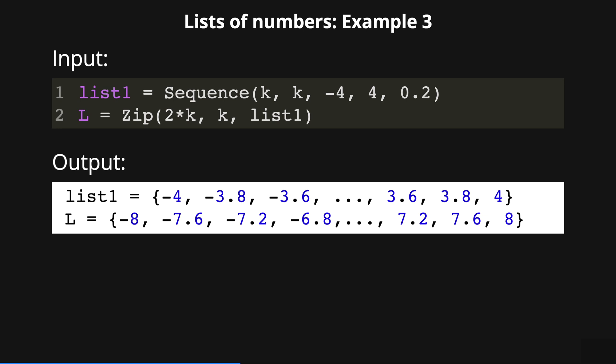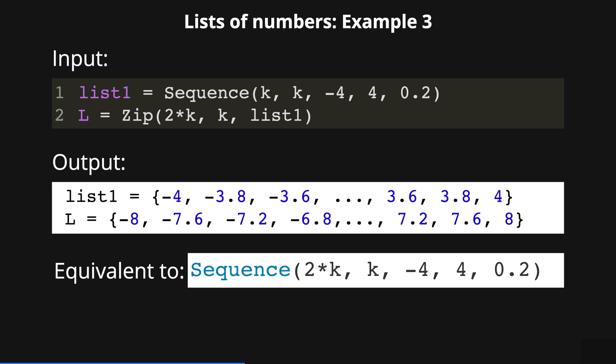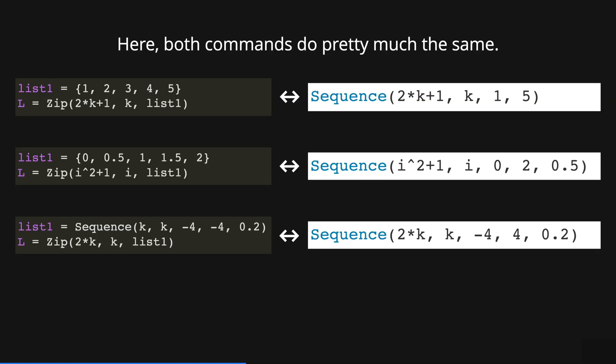The output here is the list L obtained by evaluating each element from list1 in the expression 2 times k. And of course there is an equivalent version using the sequence command. So it seems that both commands do pretty much the same in these cases.